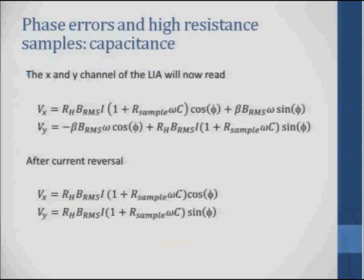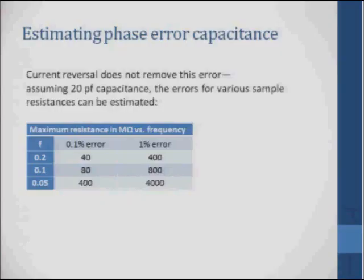This ultimately limits the accuracy of the measurement. If we assume about 20 pF capacitance in the cables, which is a pretty reasonable number, then for a 0.1% error at 100 millihertz frequency on the magnetic field, we'd be limited to about 80 megaohms. A 1% error would be about 800 megaohms. So this AC method is good to something like a gigaohm. Above a gigaohm, you're probably not going to want to use the AC method — you probably need to go back to the DC methods.